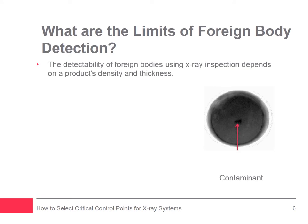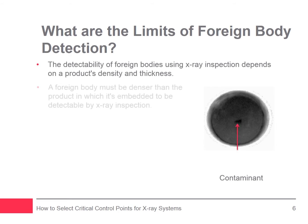The detectability of foreign bodies using x-ray inspection depends on product density and thickness. Product density determines the depth of gray in the grayscale x-ray image — the denser the product, the darker the gray. To be detectable by x-ray inspection, a foreign body has to be denser than the product in which it's embedded, meaning it will absorb more x-rays and show up as an area darker than its surroundings. Any foreign body with a density similar to or less than that of the product is incapable of being detected. As product thickness in the path of the x-ray beam increases, so does its overall level of absorption, making detection more difficult.